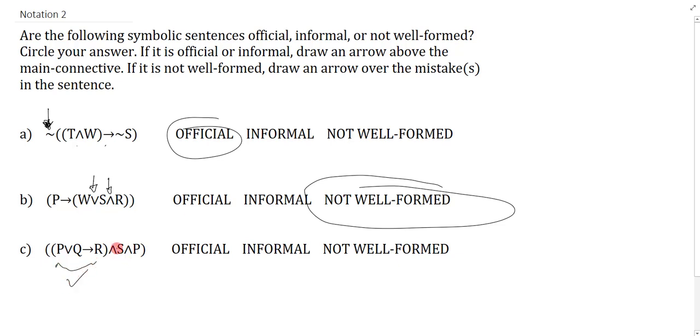The main connective of this inside thing is clearly the conditional, because the arrow dominates over all the other connectives. But what about this? Here I have the two hats or the two ANDs, but of course that's okay, because if I have a string of ANDs or a string of ORs all in a row, I know that it's the right one that is the main connective. So this is in fact informal because of the bracket situation, and it is perfectly well-formed.